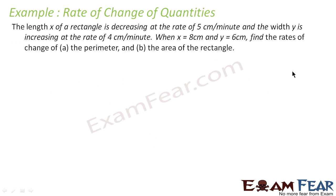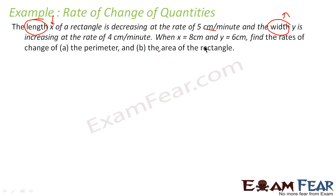Let us take one more example. The question says the length of a rectangle is decreasing at some rate and the width is increasing — both length and width are variable, given in centimeters per minute. We are given that x = 8 and y = 6. We have to find the rate of change of perimeter and rate of change of area.